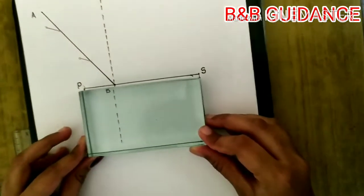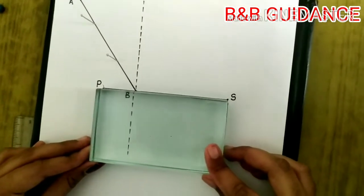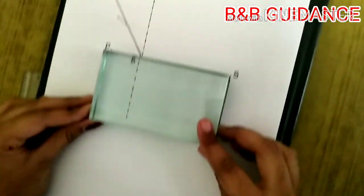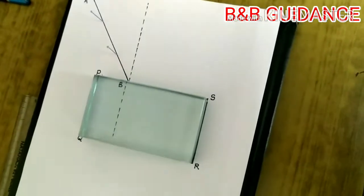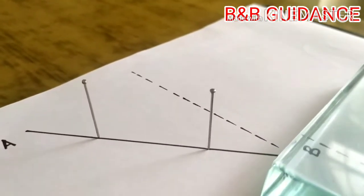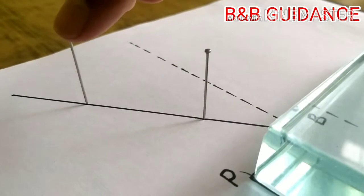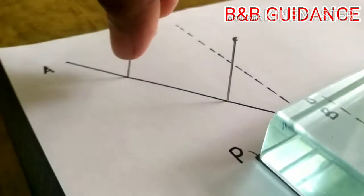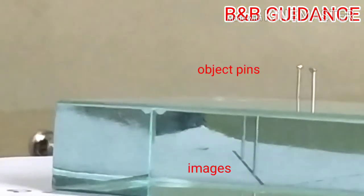Next, place the glass slab back and here the boundary of the glass slab must align with the outline we had traced. So here you can see both of the pins and I think that the first one is a bit tilted, so let me make it vertical. And now you can see the object pins and its images.